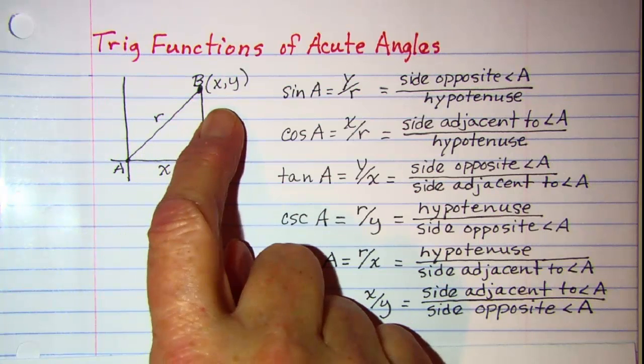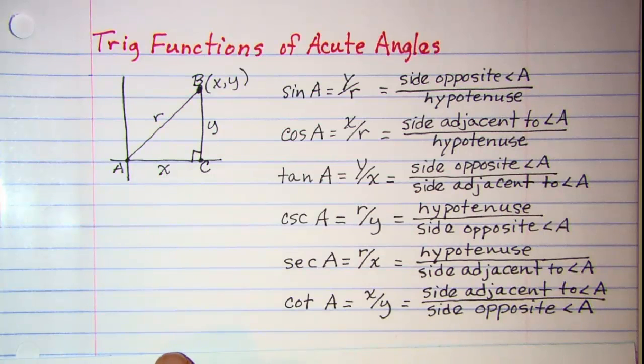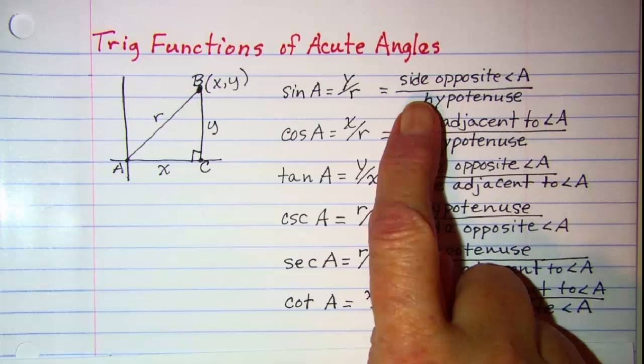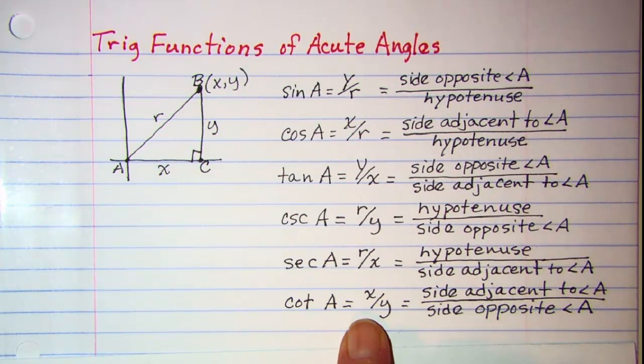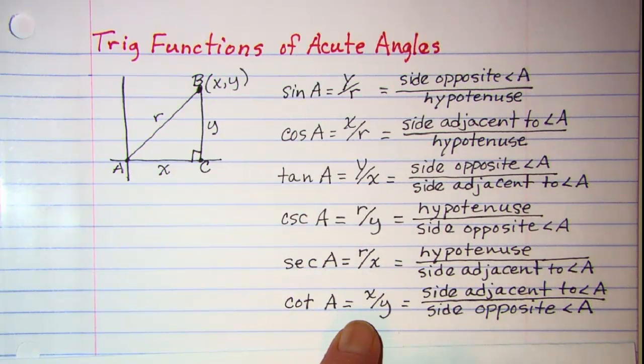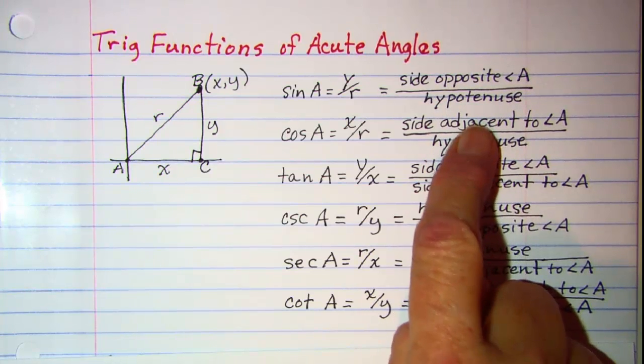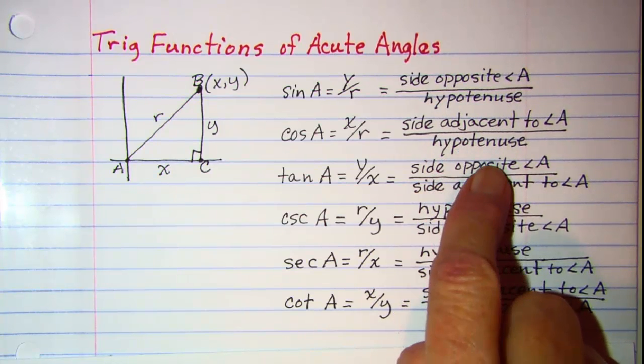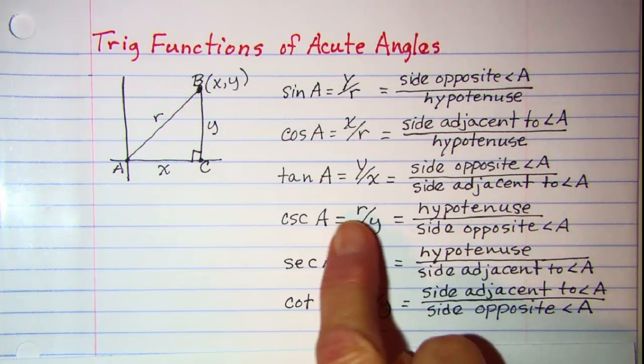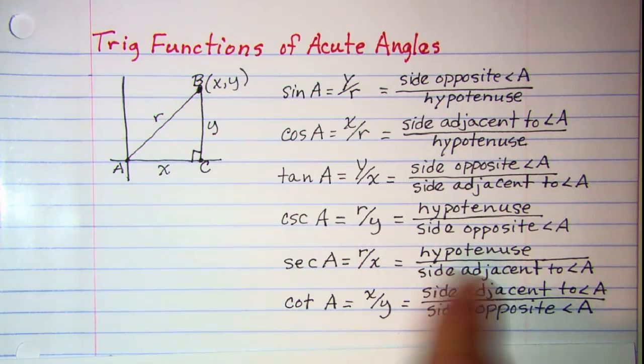And the side opposite is the one that is across the way. So you can think of your trig functions either with the coordinates as defined here, or as opposite over hypotenuse, adjacent over hypotenuse, opposite over adjacent, hypotenuse over opposite for the cosecant, hypotenuse over adjacent for the secant, and then adjacent over opposite for the cotangent.